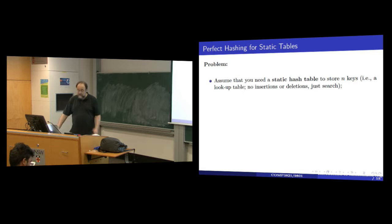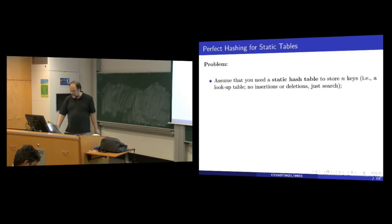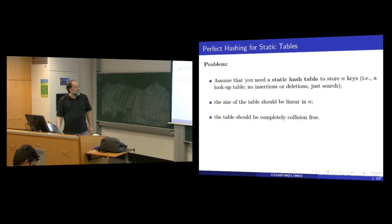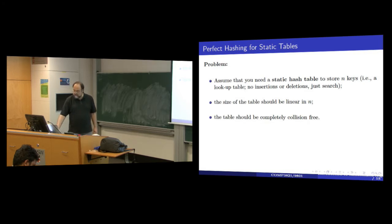Smart trial and error is one in which the number of times you can fail is small, so the construction will terminate in a reasonable amount of time. The size of the table should be linear in n, and the table has to be completely collision free — when you have the key you don't have to do any subsequent search, you can immediately find it in the table.